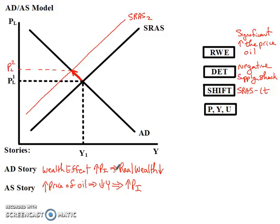The idea is: if I was a millionaire and prices of goods and services double, I still have a million dollars, but that million dollars doesn't go as far as it used to. My real wealth declines, my real ability to buy goods and services declines, and that causes me to engage in less consumption. So production goes down, prices go up, spending falls, and that leads to lower gross domestic product.